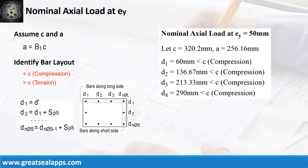Given column width equals 350 mm and steel covering equals 60 mm, follow the given computations to get the distances of each bar layer from the edge of the column and force type relative to the neutral axis. D sub 1 equals 60 mm — compression. D sub 2 equals 136.67 mm — compression. D sub 3 equals 213.33 mm — compression. D sub 4 equals 290 mm — compression.